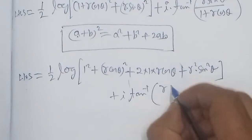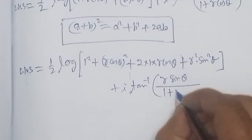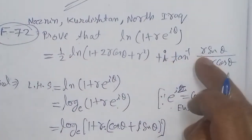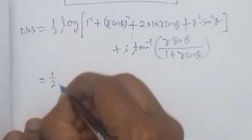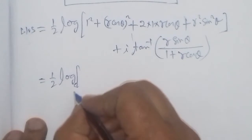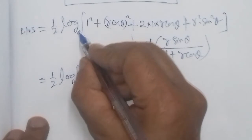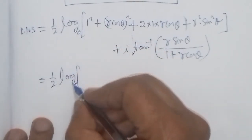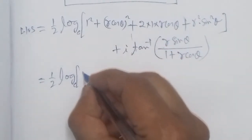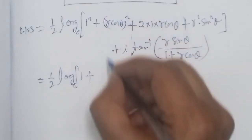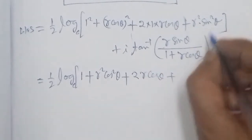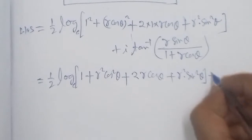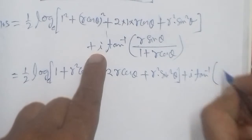We now simplify to obtain the required result equal to the right hand side. We have ½·log(1 + 2r·cosθ + r²·cos²θ + r²·sin²θ). The base is e, which is understood and not written. Since 1² = 1, and squaring gives r²·cos²θ, the terms collected inside are 1 + 2r·cosθ + r²·cos²θ + r²·sin²θ, plus i·tan⁻¹(r·sinθ / (1 + r·cosθ)).